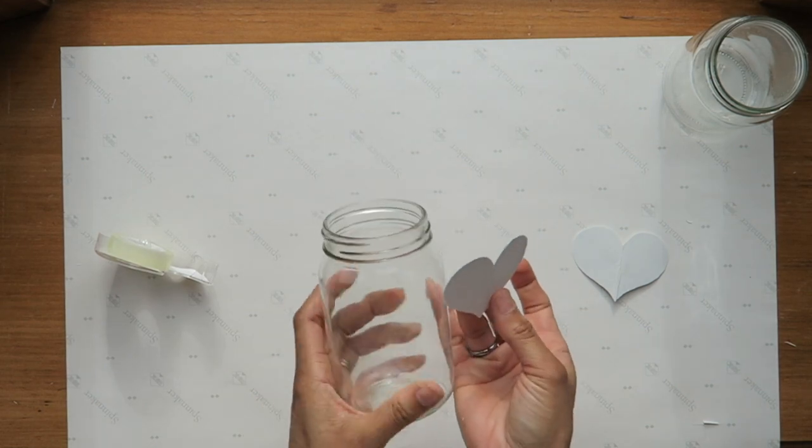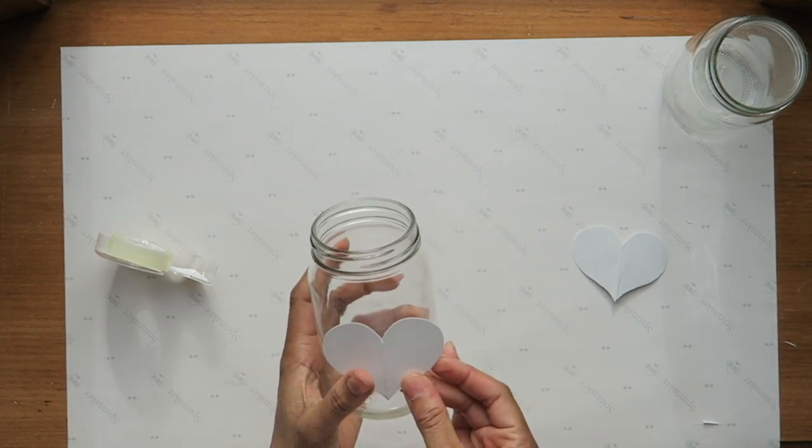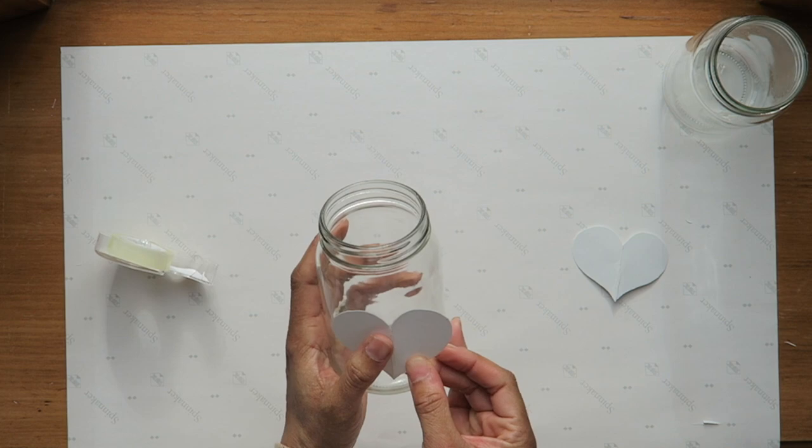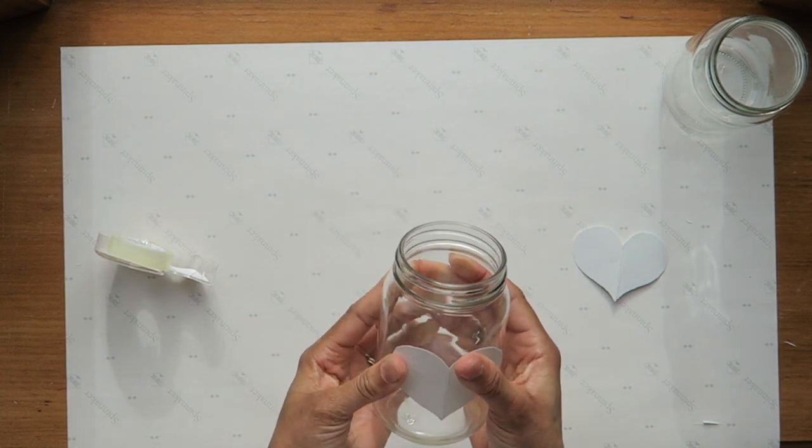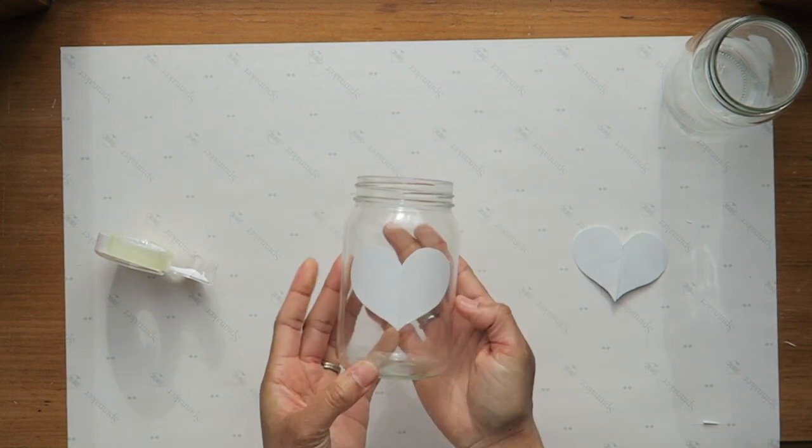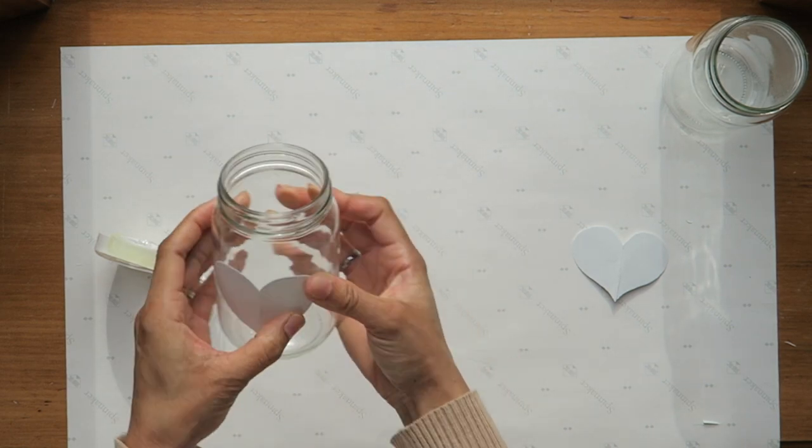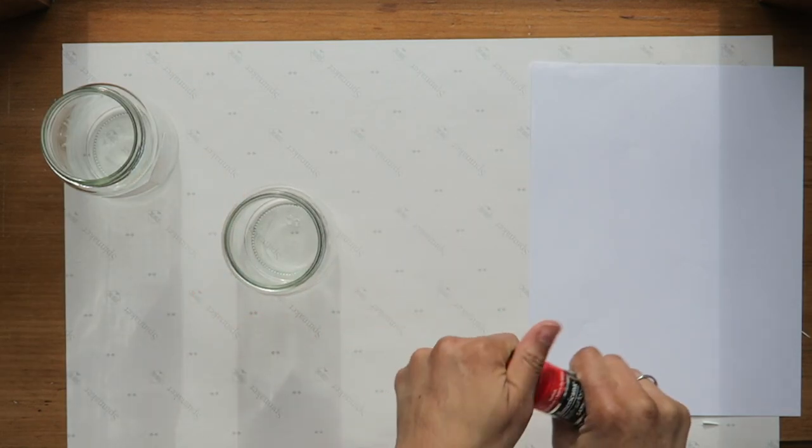Then I press this firmly down on the jar. The tape held up pretty well—it came unstuck probably a couple of times, but I was able to press it down and it did stay eventually. Now I'm getting the red paint out.